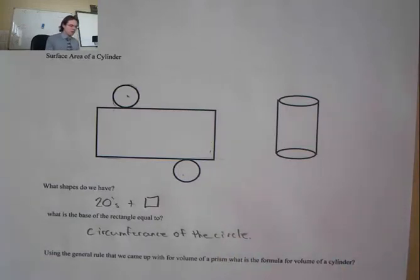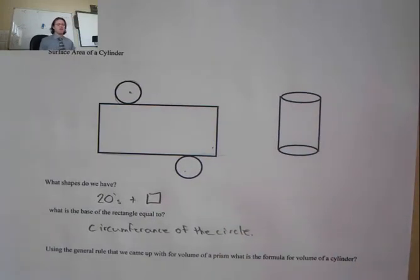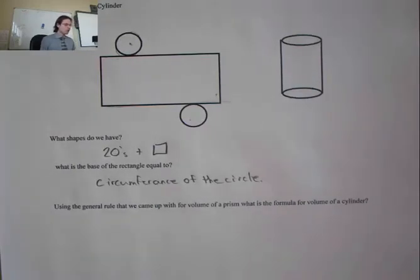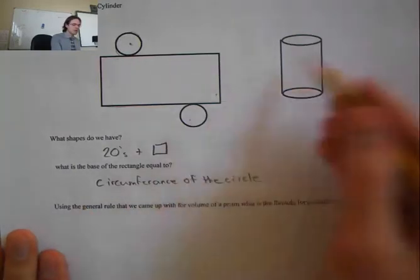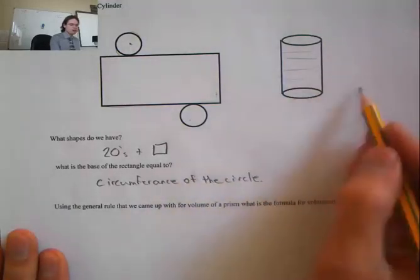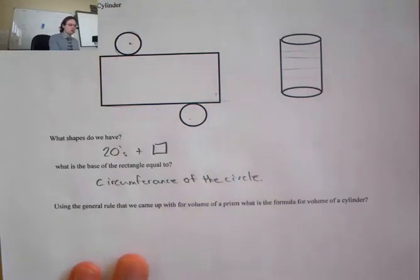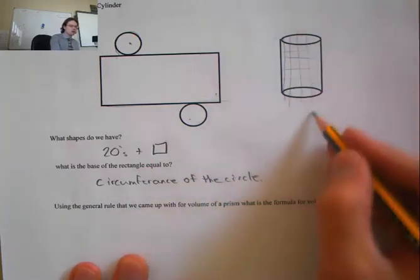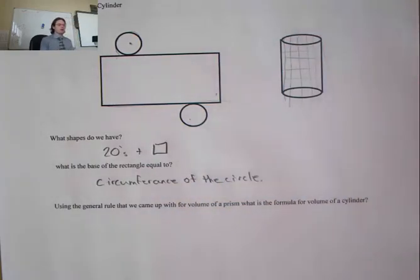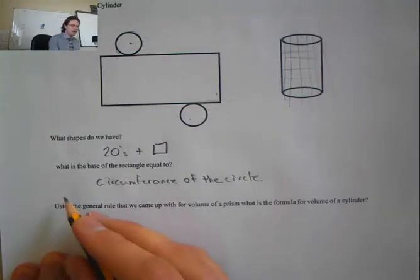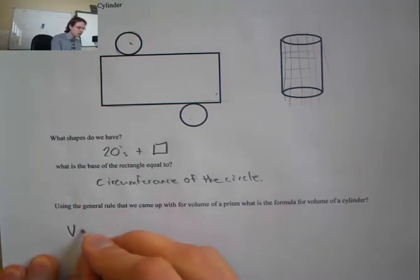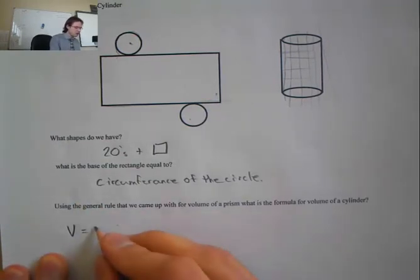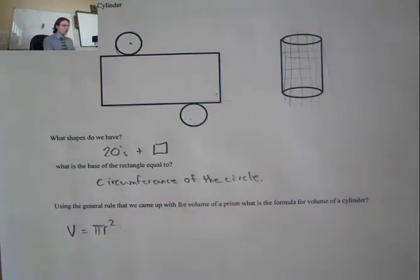Using the general rule for a prism to calculate the volume of a cylinder: the face that doesn't change is the circle. If I cut the cylinder this way it's always a circle; cutting the other way makes it narrower then wider. So I have slices of circles, and volume = πr² multiplied by the depth.